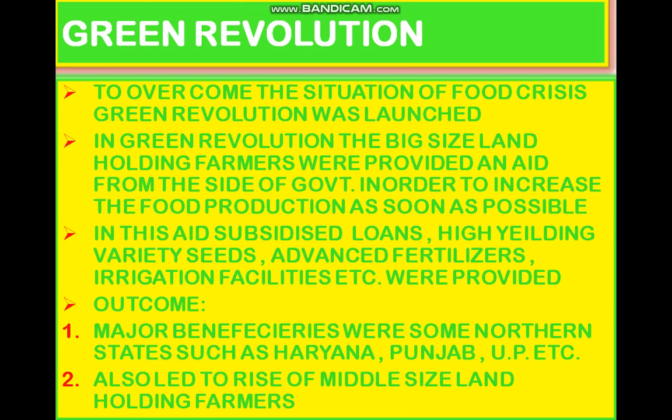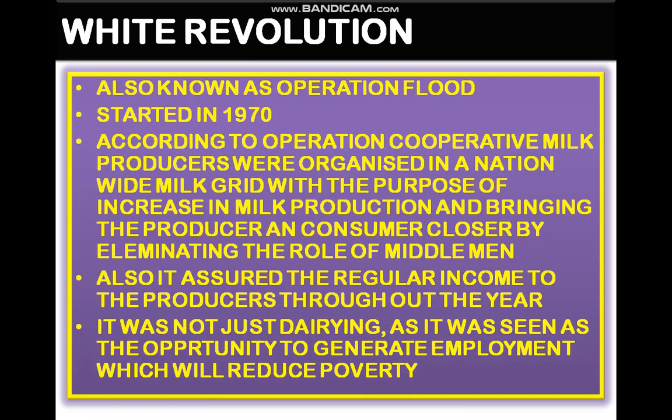The aid was provided only to the big-size landholding farmers. The major outcome of the Green Revolution was that northern states became the beneficiaries of this organized plan — such as Haryana, Punjab, and Uttar Pradesh — while other states were left behind. It also led to the rise of another peasantry class, that is, middle-size landholding farmers, or the mid-size peasantry.